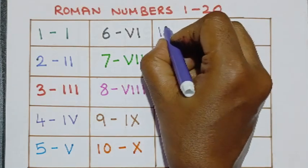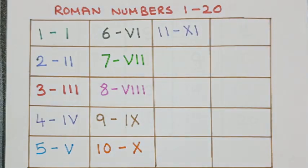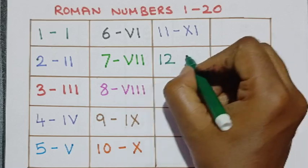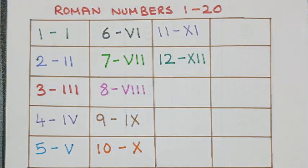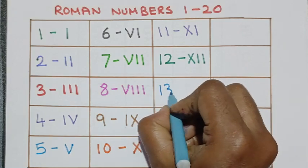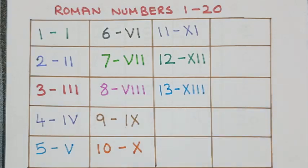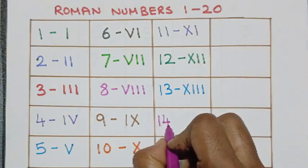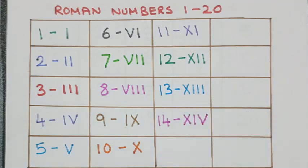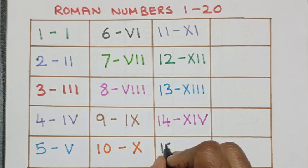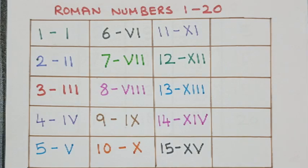11 this is Roman number 11, then comes 12 this is Roman number 12, then comes 13 this is Roman number 13. Then comes 14 this is Roman number 14, then comes 15 this is Roman 15.